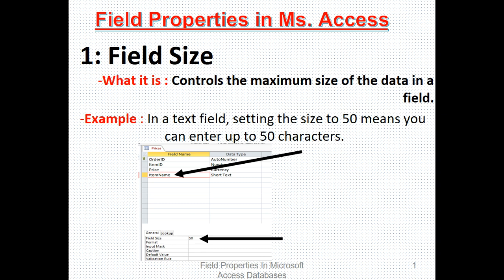We'll start with the first type of field property called field size. What is it? It controls the maximum size of the data in a field. For example, here we have item name. I want only 50 characters. If you write a sentence more than 50 characters describing the field size, it will be rejected.